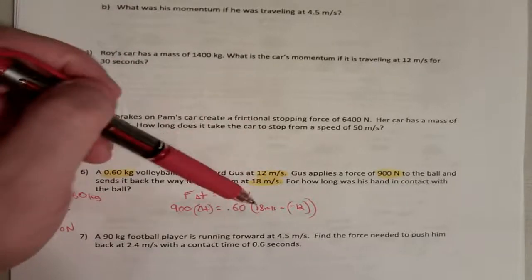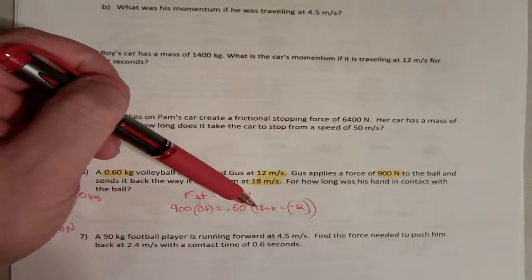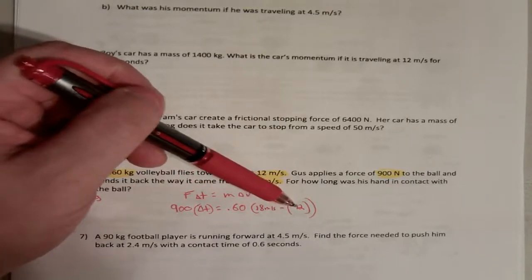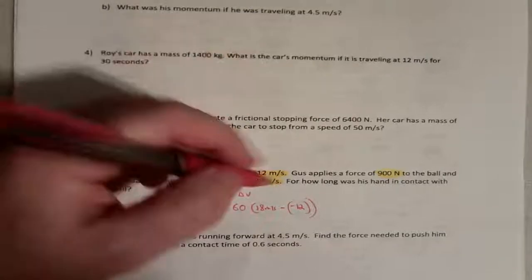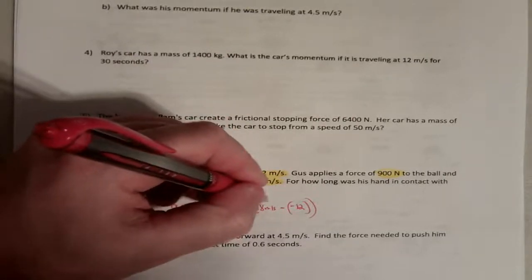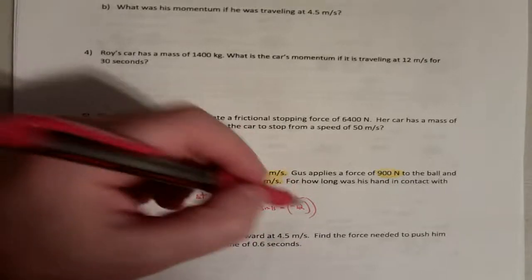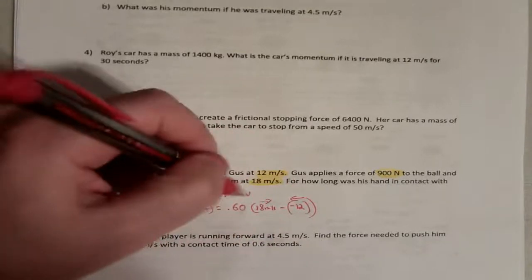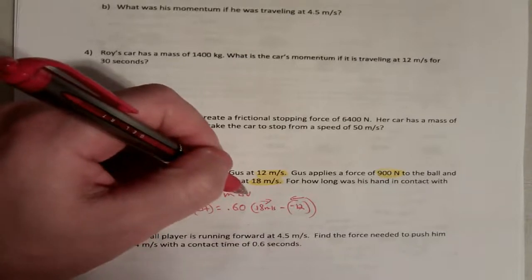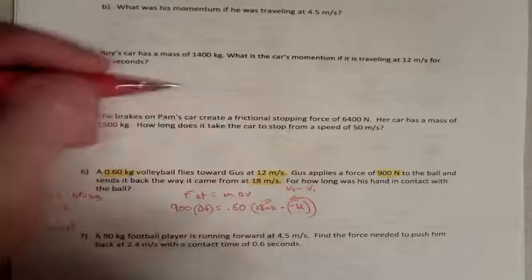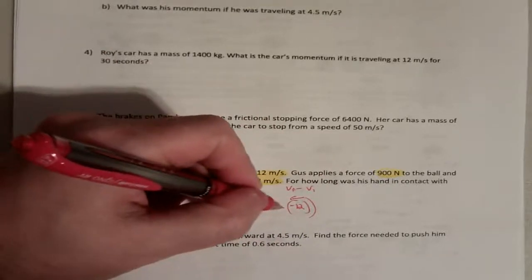So, our final velocity is 18 meters per second. Our initial velocity is negative 12 meters per second, because it's the opposite direction, right? So, the volleyball ends up going this way. It starts out going this way. So, that's why this is negative. And remember, the change in velocity is final minus initial. So, that's why this minus sign is already going to be here.